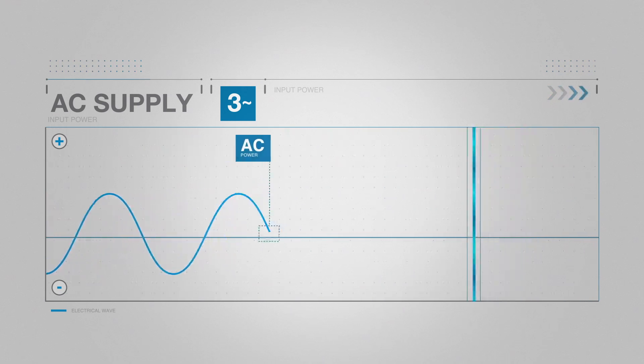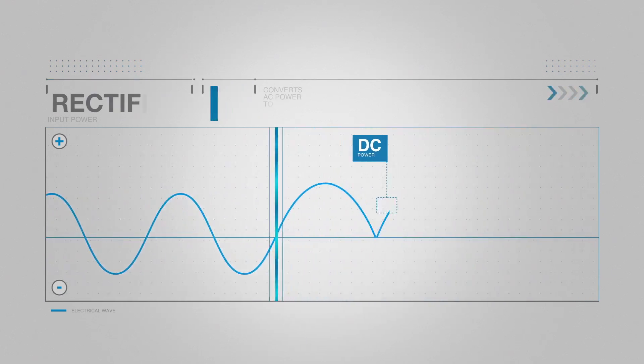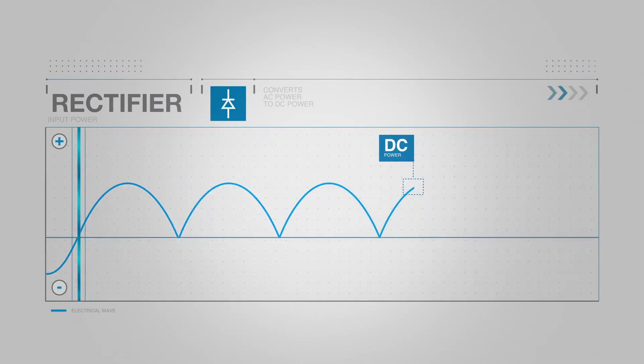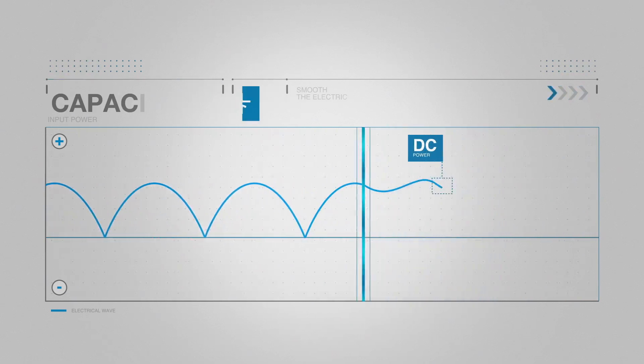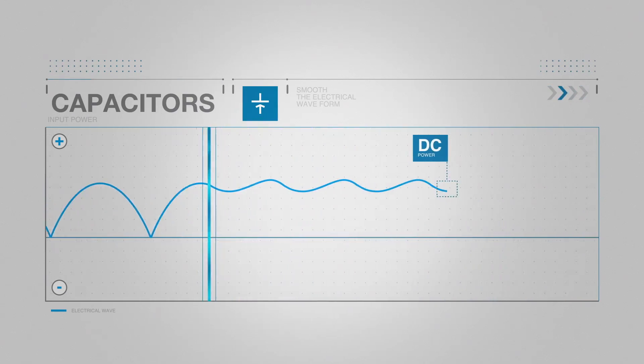Inside the drive, the input power is run through a rectifier that converts the incoming AC power to DC power. The DC power is fed into capacitors inside the drive.